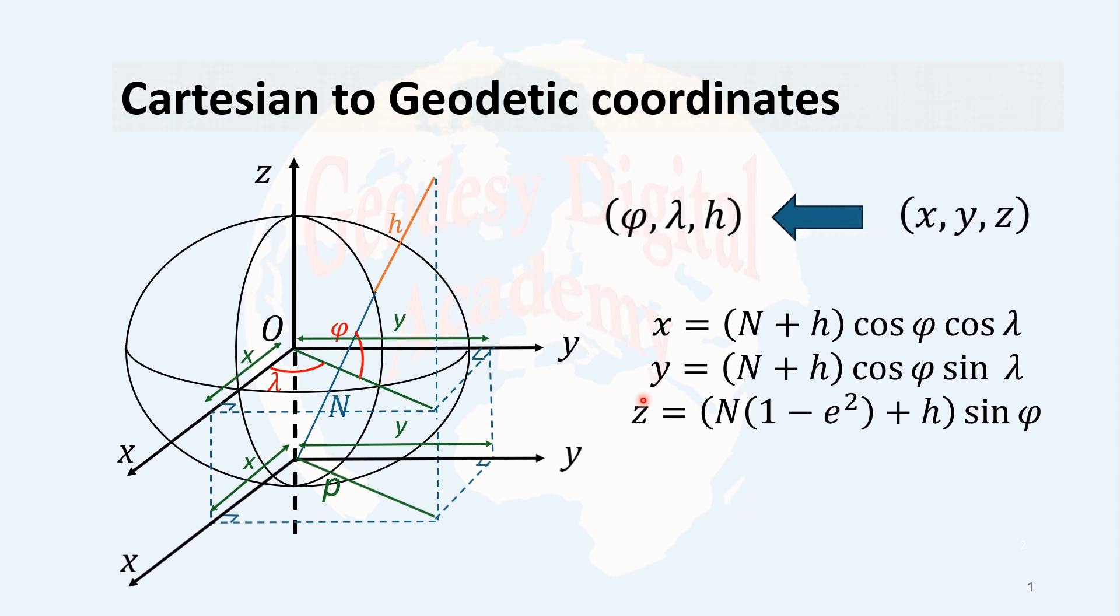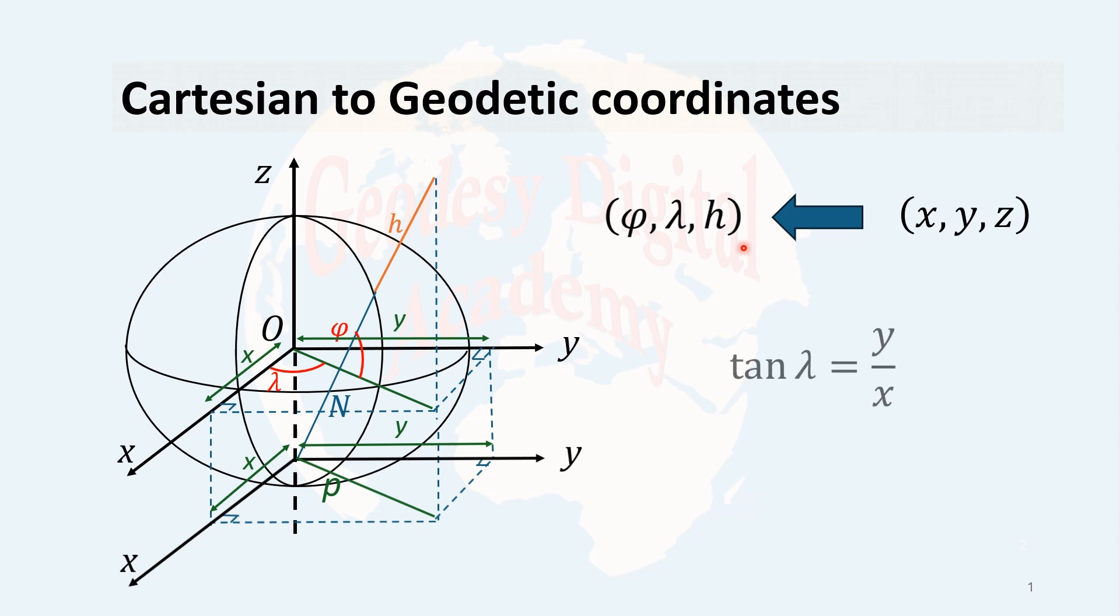Now, the goal is to do the opposite. We have x, y, and z or the Cartesian coordinate and we need the geodetic coordinate. This is not as simple as we did for spherical coordinates. But since the ellipsoid is rotational, then for the lambda, we can use the same principle or the same geometry. So in that case, we have a right angle triangle here.